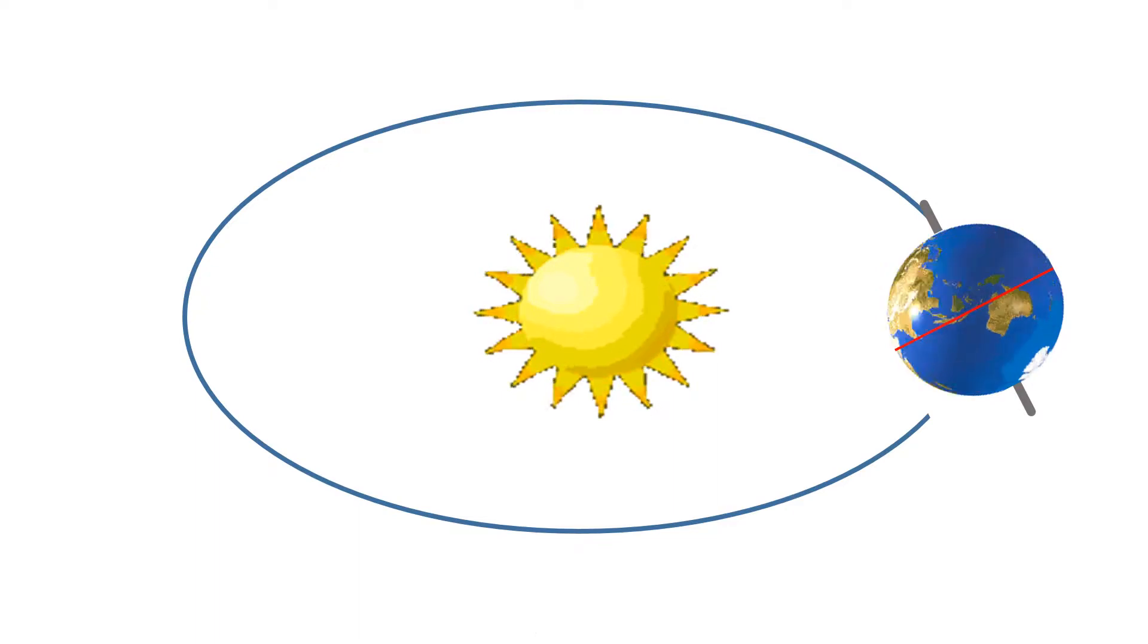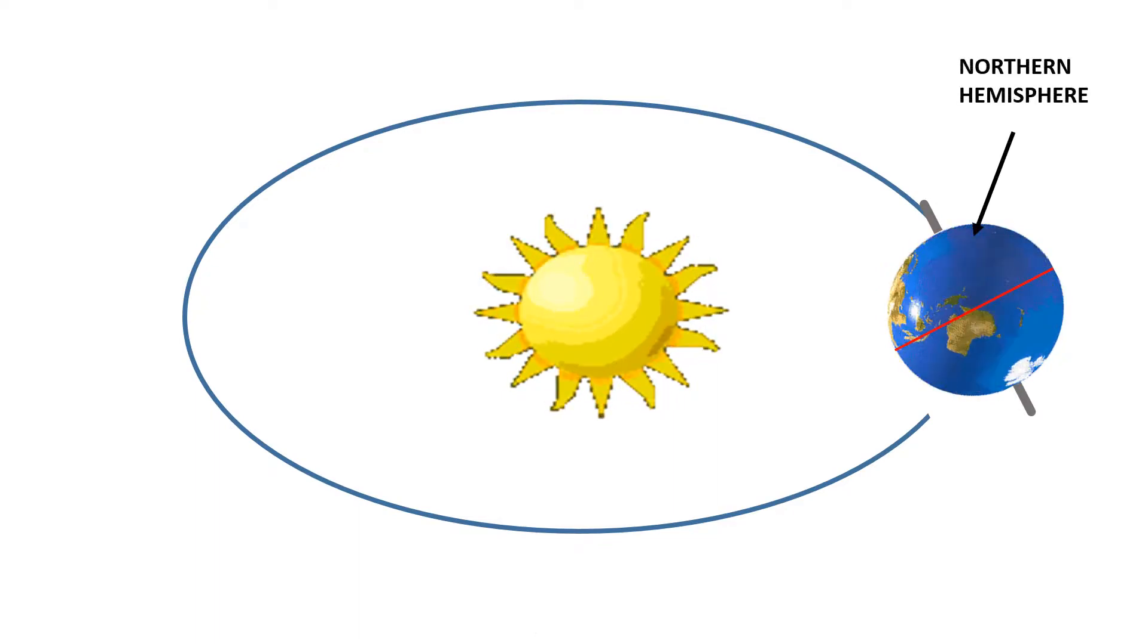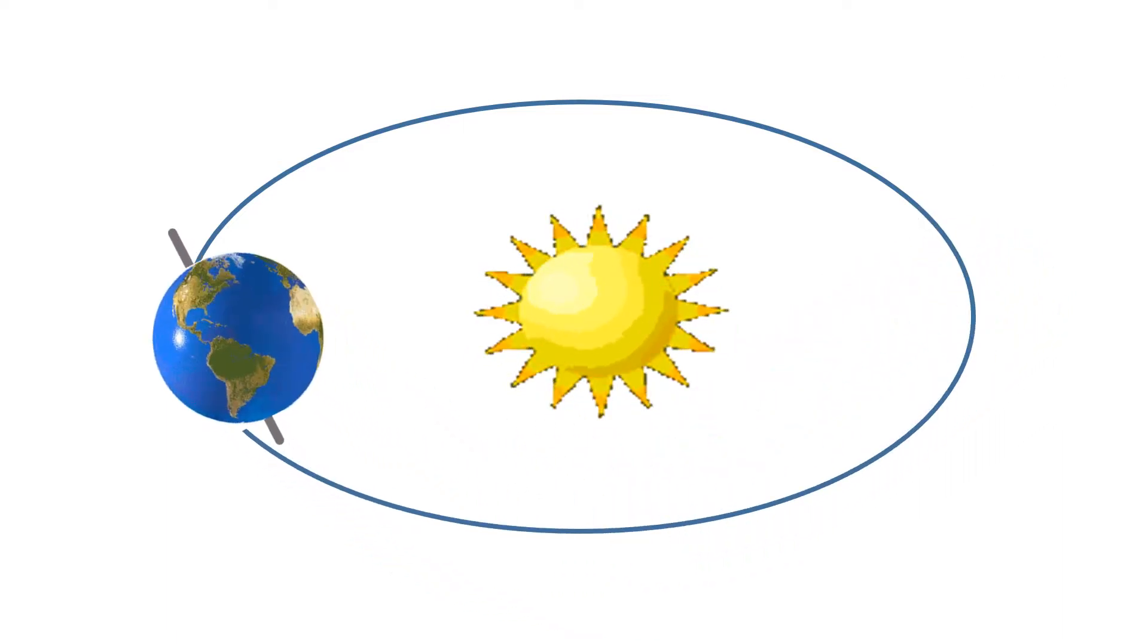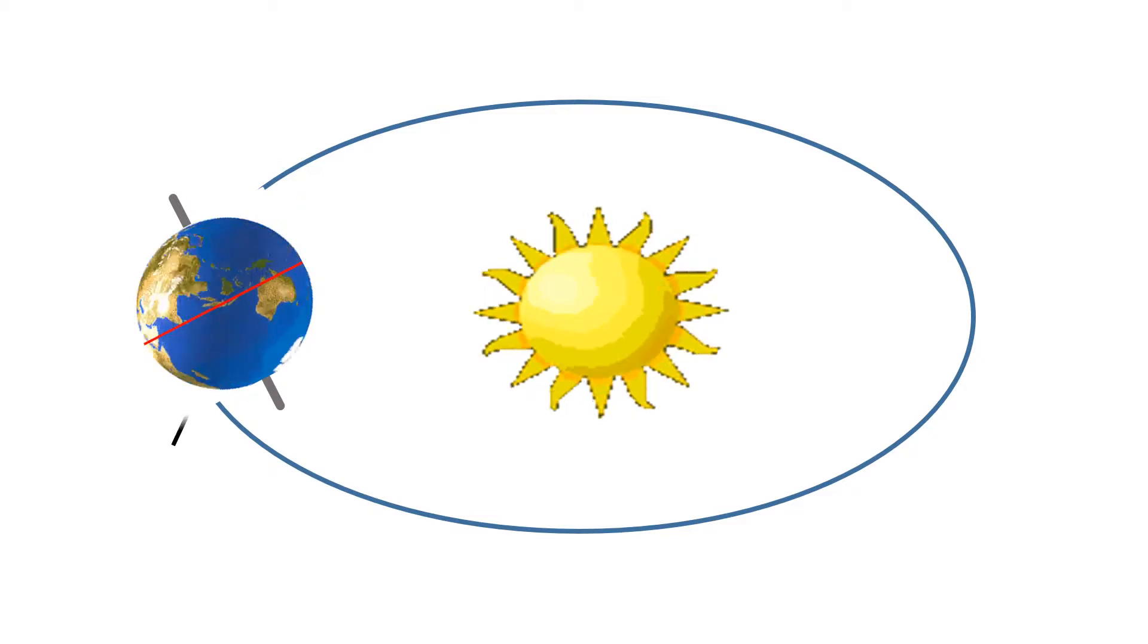For half of the year the Earth is tilted such that the northern hemisphere is more towards the Sun. For the other half of the year the southern hemisphere is more towards the Sun.